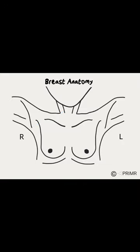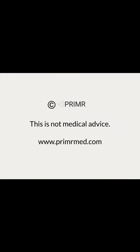Just beneath the breast are the muscles, bones, and nerves of the chest wall. Just deep to the chest wall are the lungs. The heart lies between the lungs, but extends mostly to the left side of the chest. The location of the heart can be a factor in planning radiation therapy for women with left-sided breast cancer.